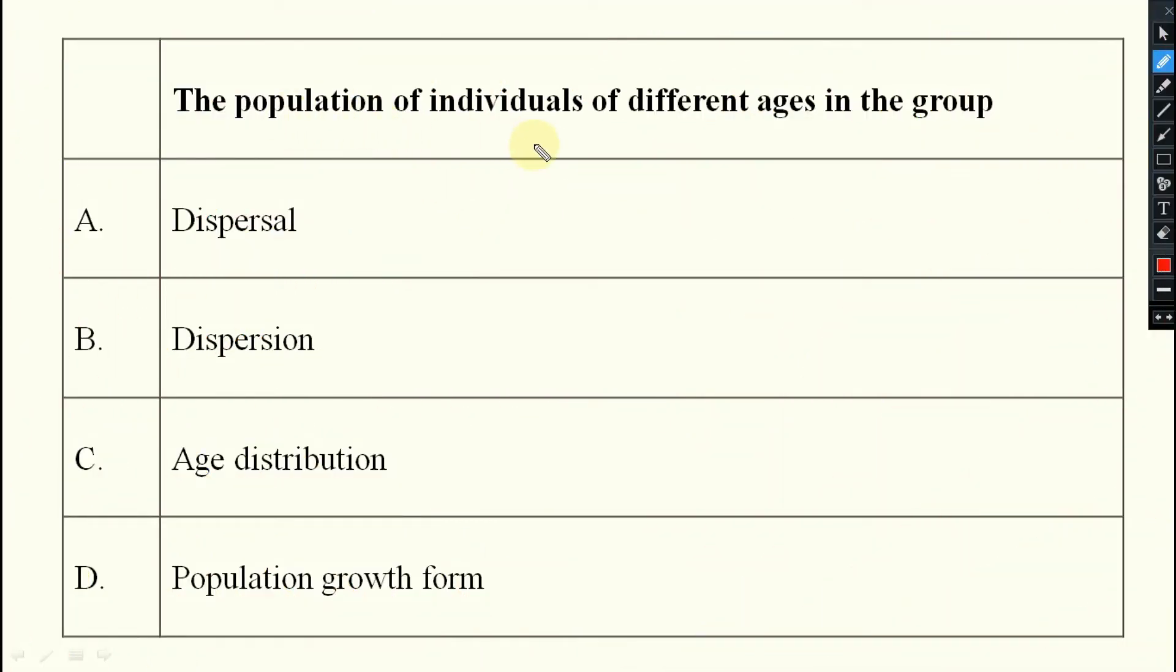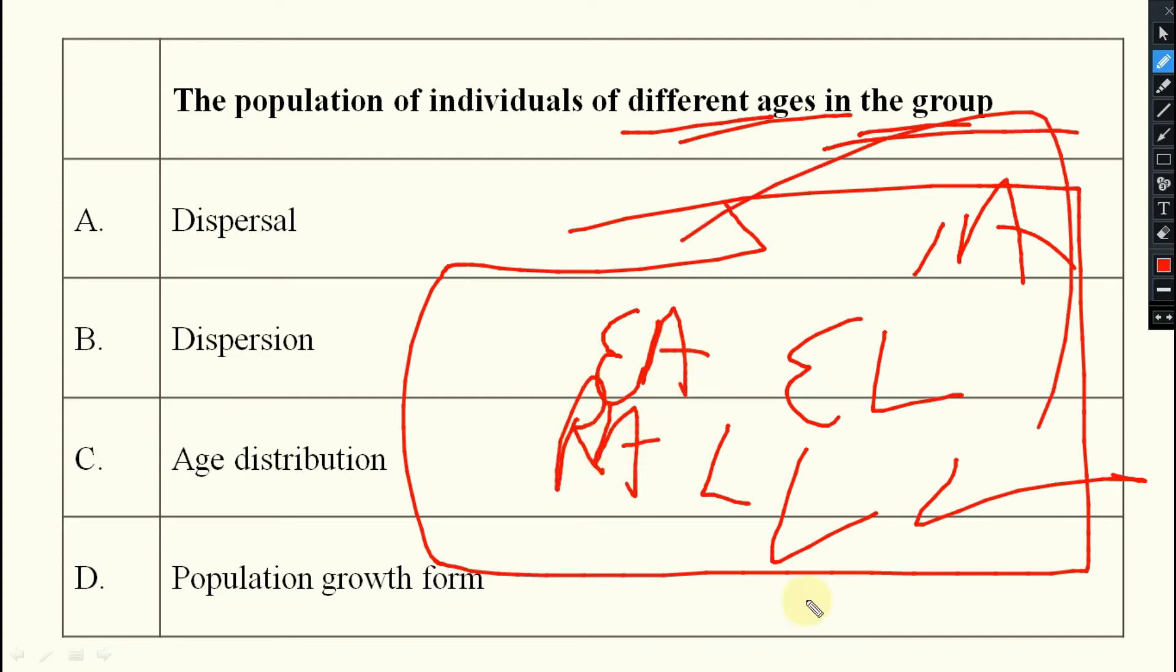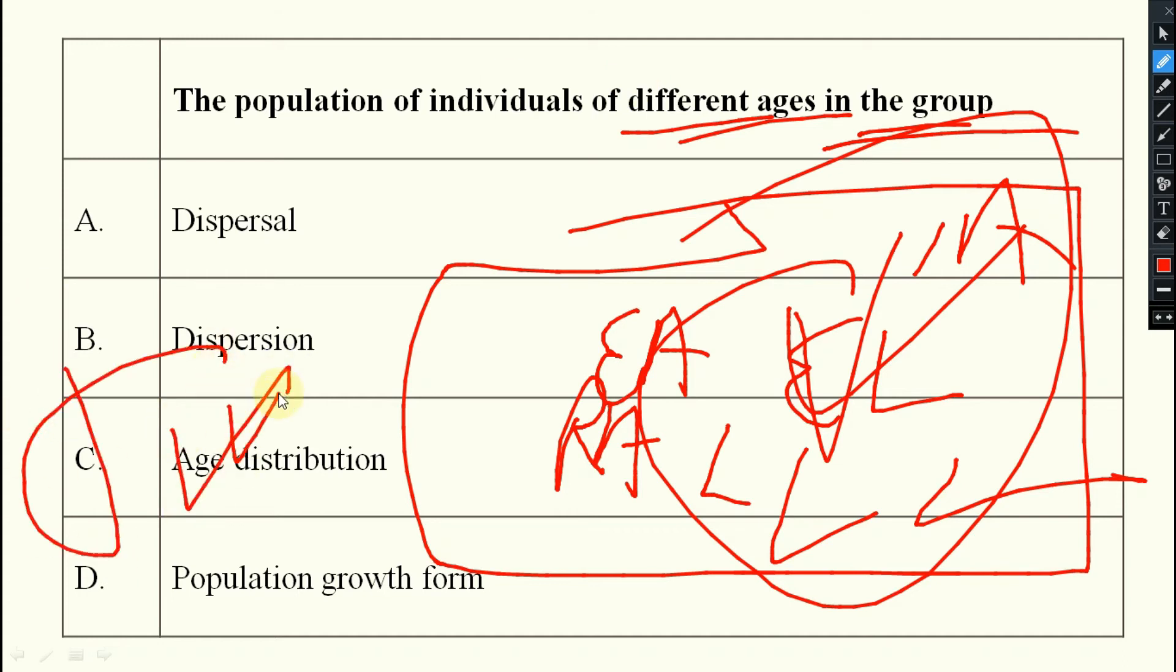The population of individuals of different age groups in the group, ages in the group. Suppose a population is there: some are adult, some are larva, some are early larva, some are late larva, some are early adults, some are reproductive adults. Like this, different age groups will be there. This is known as your age distribution, very important.